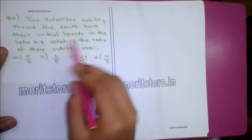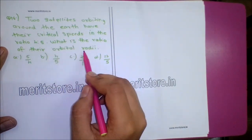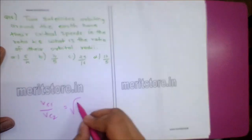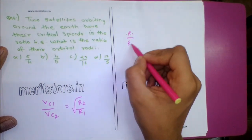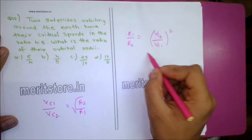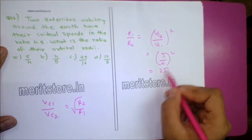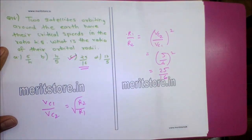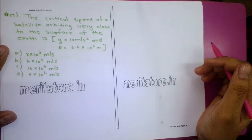Question 16: Two satellites orbiting Earth have critical speeds in the ratio 4:5. What is the ratio of their orbital radii? Vc1/Vc2 = √(R2/R1), so R1/R2 = (Vc2/Vc1)² = (5/4)² = 25/16. Option C, 25:16, is the correct answer.